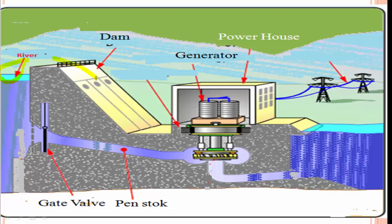We will talk about the Dam. When we open the valve, water will flow to the turbine. Once it reaches the turbine, the potential energy of the river is utilized. Because of gravity, the stored energy in the form of potential energy will be converted into kinetic energy. This kinetic energy will be utilized by means of a turbine.